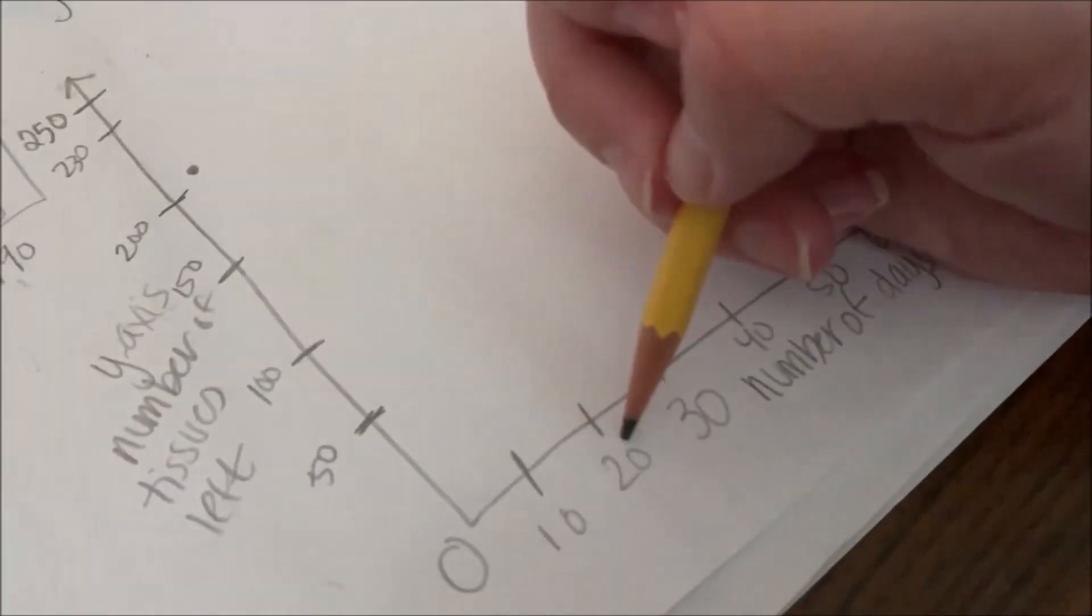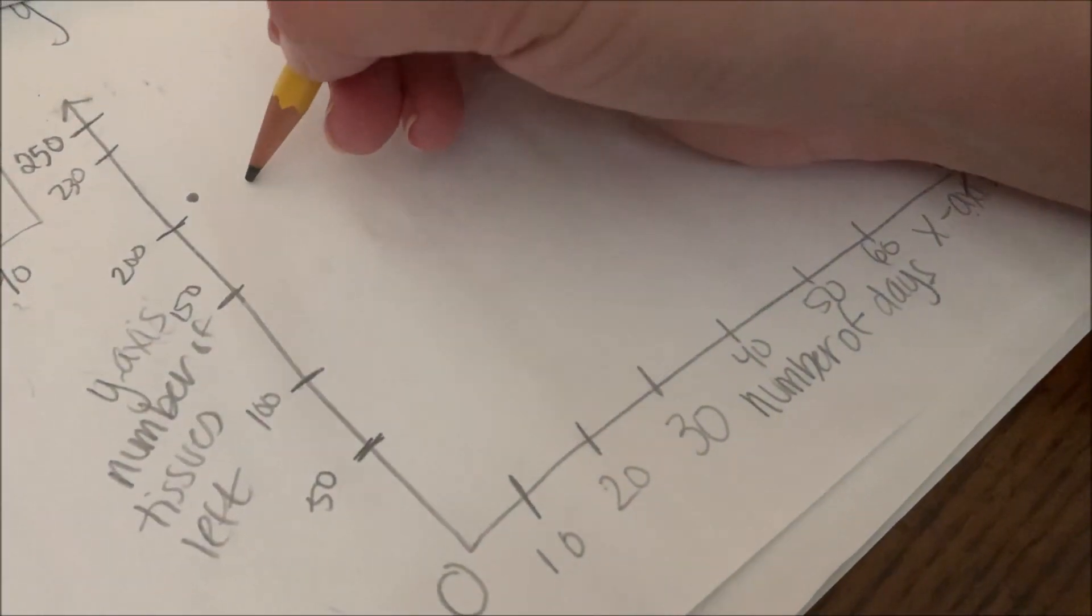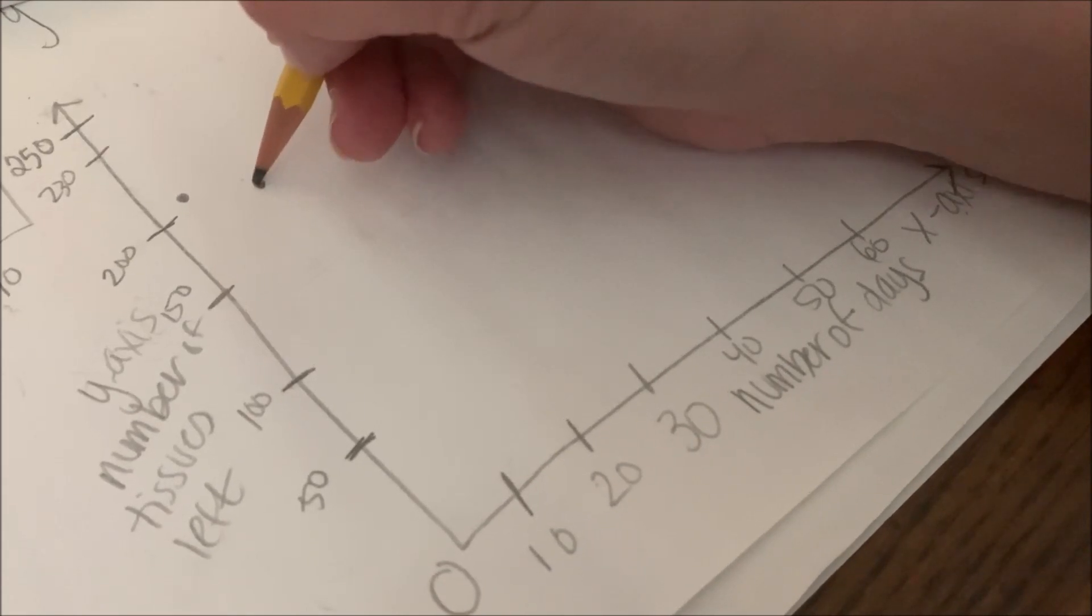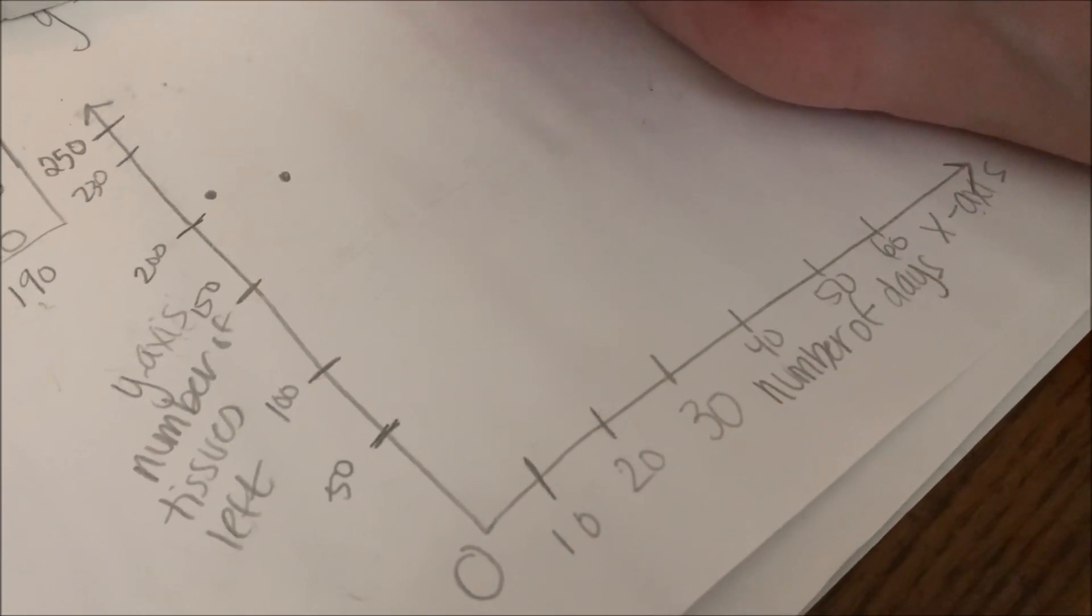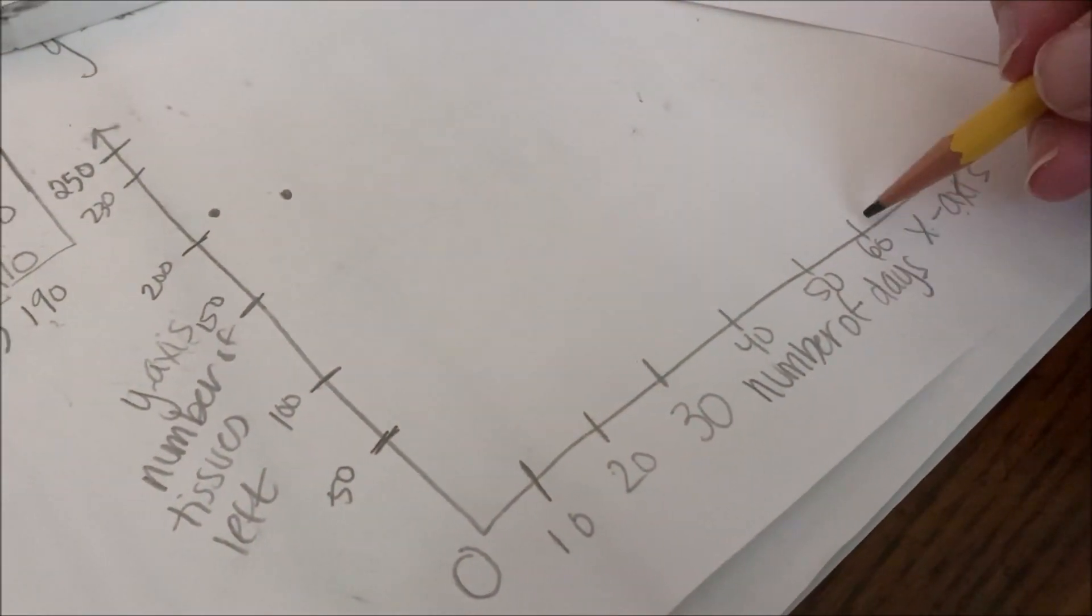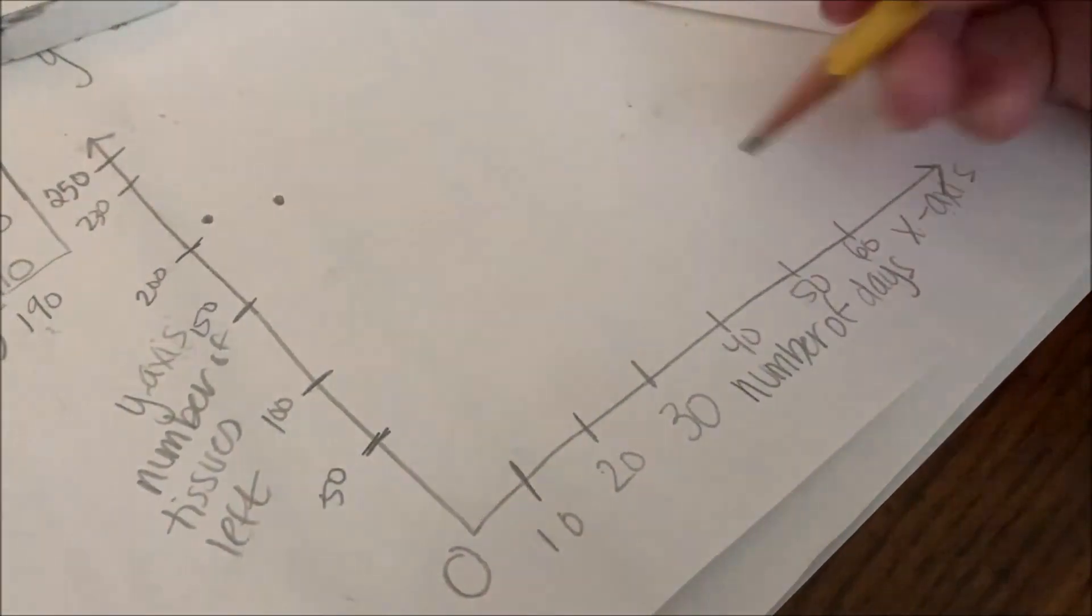So after 20 days, there's my eraser. After 20 days, exactly 190 tissues left at two tissues per day. So let me pick another data point so I can kind of see how this is going to look. Let me go with 60.